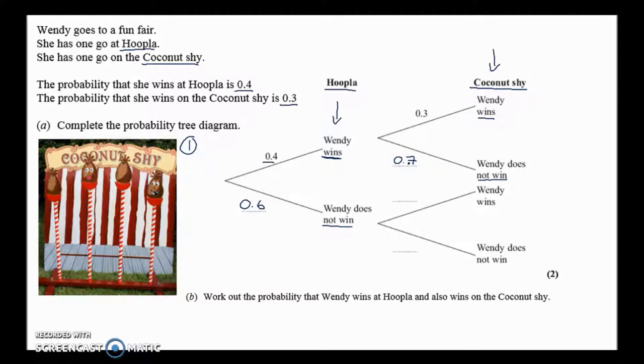And this is the bit that people find confusing. So you either play the hoopla and you win, and then you go off to the coconut shy game, or you play the hoopla and you lose, and then you go off to the coconut shy game. You're still at the same point, you're still just about to play the coconut shy, so these two probabilities are the same as up here, because it's the same game.